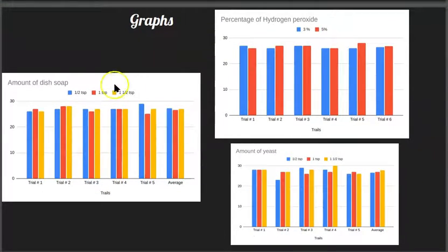Our graphs showed that in the dish soap trials, one and a half teaspoons showed a greater result than a half teaspoon. The same was true for the amount of yeast. Our different percentages of hydrogen peroxide showed that 5% had a greater reaction than 3%.